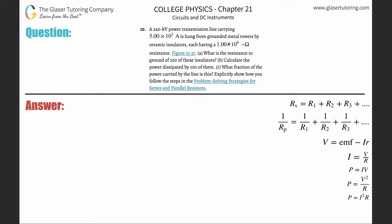Number 10. A 240 kilovolt power transmission line carrying 5 times 10 to the 2 amps is hung from grounded metal towers by ceramic insulators, each having a 1 times 10 to the 9th ohm resistance. Letter A: what is the resistance to ground of 100 of these insulators?